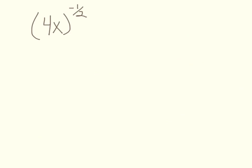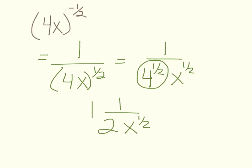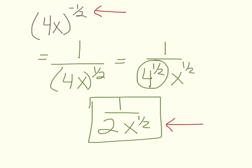Next: 4x all in parentheses raised to the negative 1/2 power. The negative 1/2 applies to both the 4 and the x, giving the reciprocal of 4x to the 1/2. Since the 1/2 power is the square root, that's 1 over 4 to the 1/2 times x to the 1/2. The square root of 4 is 2, so the answer is 1 over 2x to the 1/2. If the problem is given with rational exponents, keep your answer in rational exponents; if given as a radical, keep it as a radical.